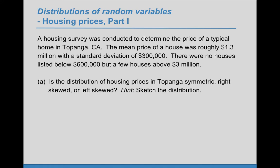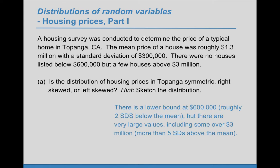Is the distribution of housing prices in Topanga symmetric, right skewed, or left skewed? We know that there are no houses below $600,000, so that's a lower bound.